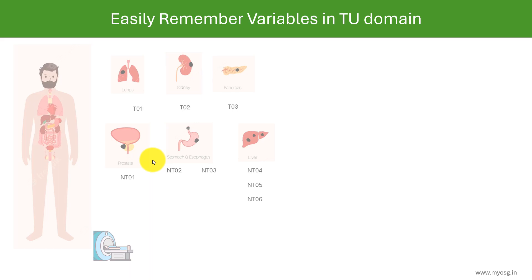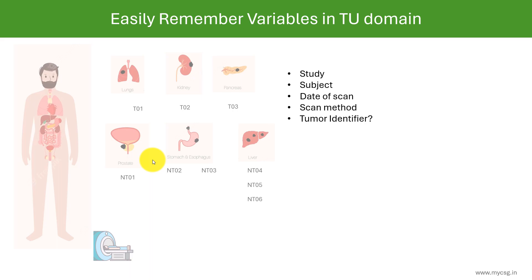We will now look at the questions being asked to collect data for the TU domain. Which clinical study is this and which subject is this? What is the date on which the scan is performed? What is the method of scanning — whether MRI, CT scan, or X-ray? In cases where lesions are externally visible, even photography would be sufficient. The scan method and the tumor identifier — the unique number assigned to each tumor — will also be collected and stored.